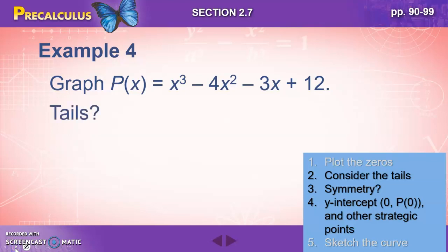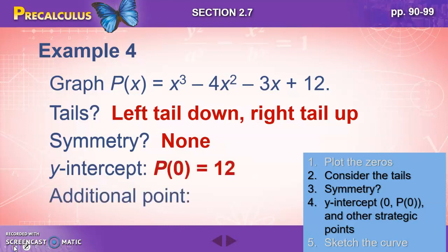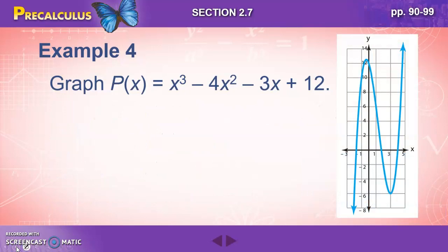Next, we're going to consider the tails. We've got a positive leading coefficient and an odd degree, which means left tail down and right tail up. Symmetry, we've got both odd degrees and even degrees, so no symmetry. The y-intercept when we plug in zero is 12. Additional points, we can choose maybe three in this case, and that gives us a three and a negative six. Then we'll turn to our graph and we'll plot this.